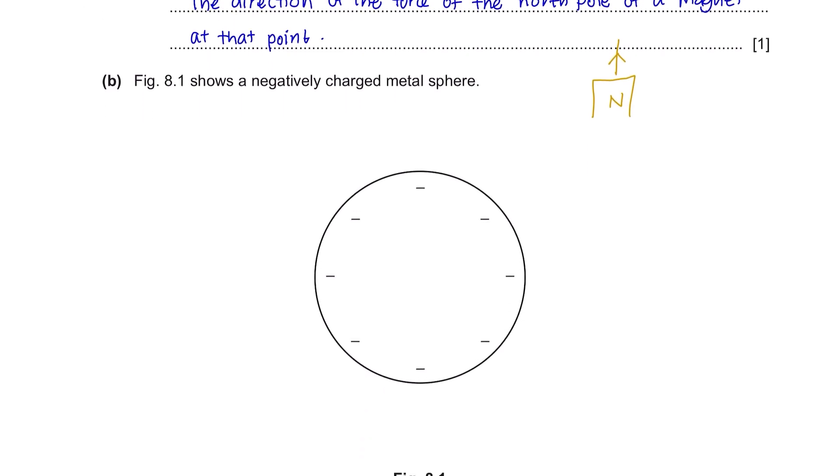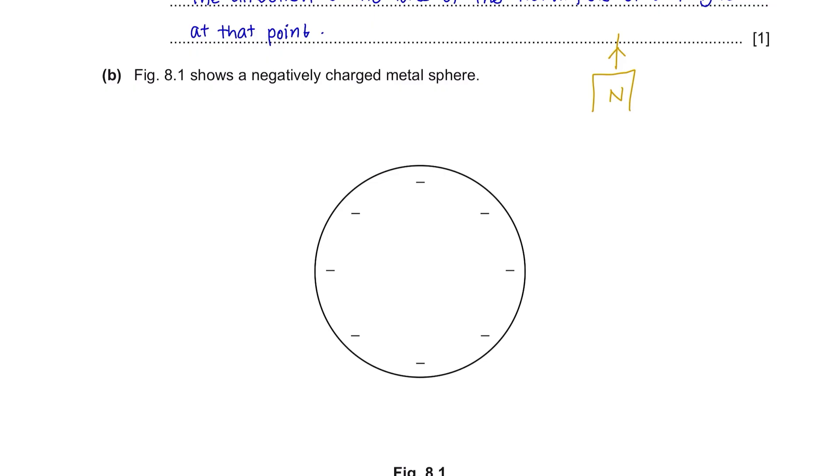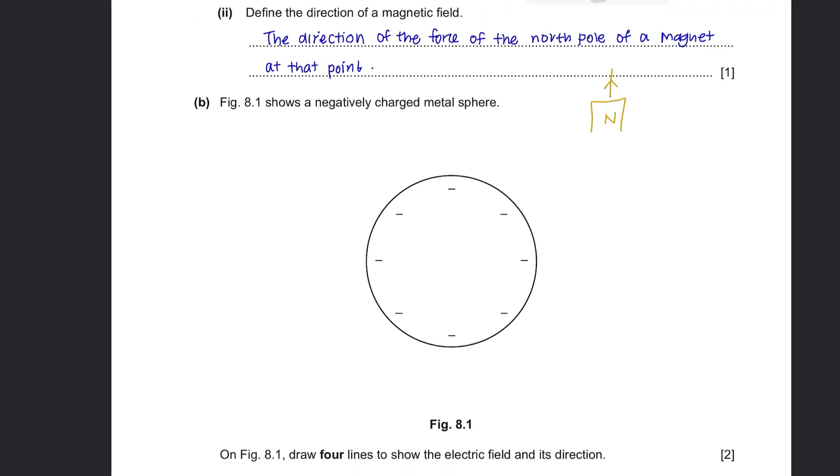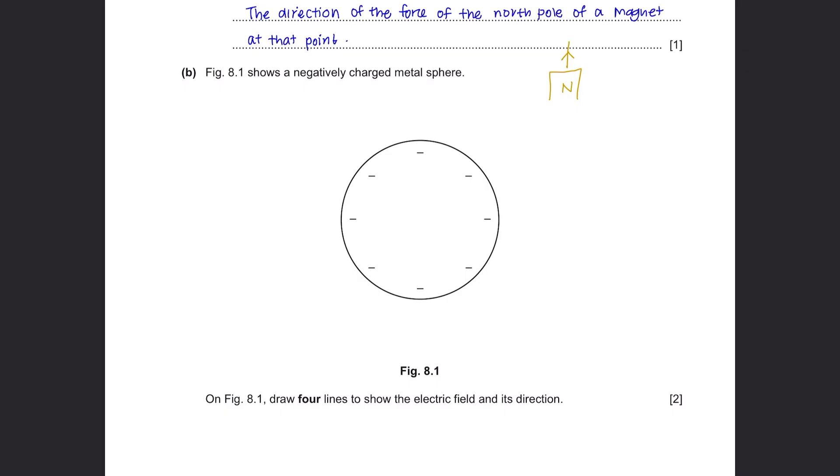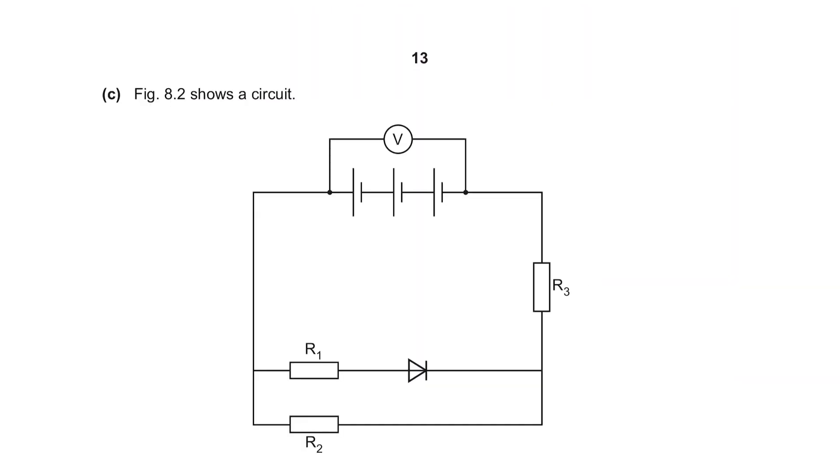Question B: Figure 8.1 shows a negatively charged metal sphere. On figure 8.1, draw 4 lines to show the electric field and its direction. The direction of electric field is always towards negative charges and away from positive charges.